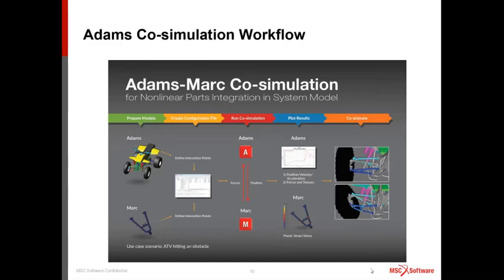This example shows an all-terrain vehicle hitting an obstacle, where one of the control arms is modeled in MARC. We can see the control arm deforming and going into the plastic regime — which with something like an MNF file would not give an accurate result. It wouldn't be possible to do this kind of analysis to look for buckling.